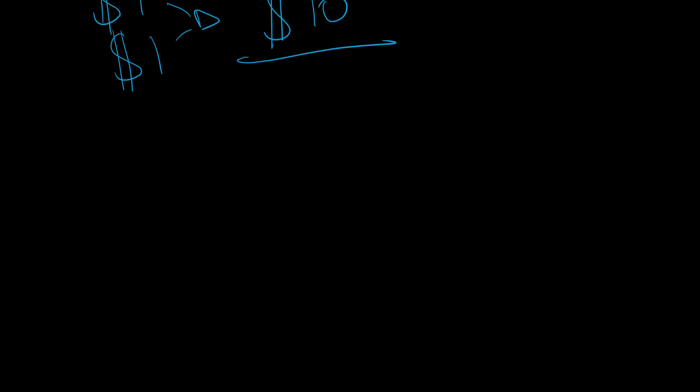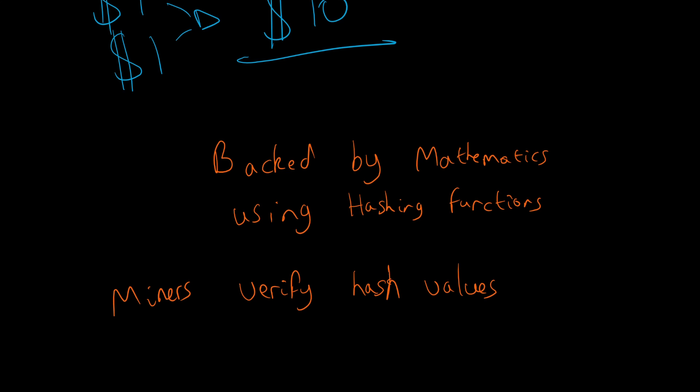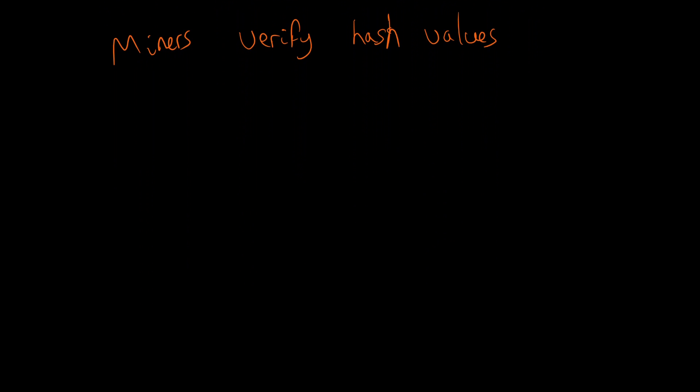All of this is backed by mathematics using hashing functions. Hashing functions, miners verify hash values. That's essentially an overview of what blockchain is. In one simple word, it is a database, nothing more essentially, nothing less. That is the best way to think of it. It is a distributed decentralized database.